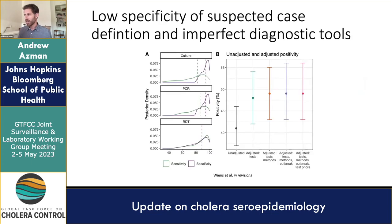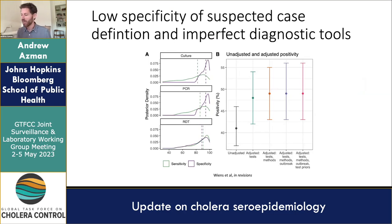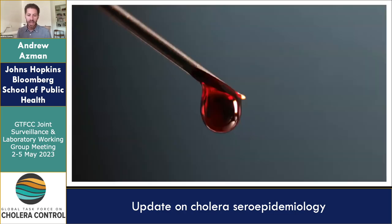It's not only those who arrive at clinics — we also have imperfect diagnostics. Only about 50 percent of suspected cases overall are likely true cholera cases. Both our case definitions and our diagnostics are imperfect.